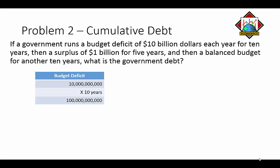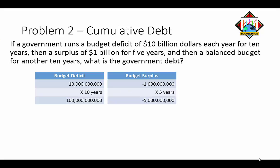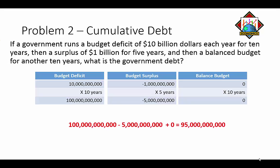Then we're going to have a surplus of a billion dollars for five years, reducing the debt by a billion dollars a year — that's a cumulative five billion dollar surplus over those five years. Then a balanced budget for another 10 years, which is zero deficit and zero surplus, so it contributes nothing. Putting it all together: 100 billion dollar debt minus five billion dollar surplus equals 95 billion dollars of debt.